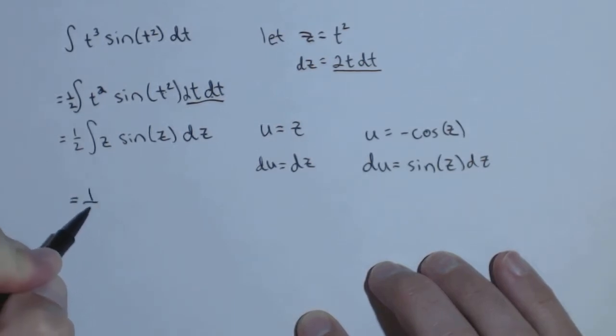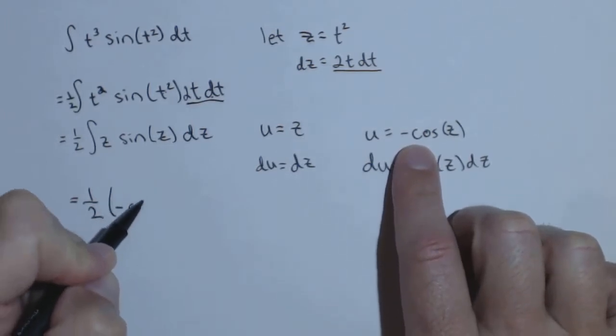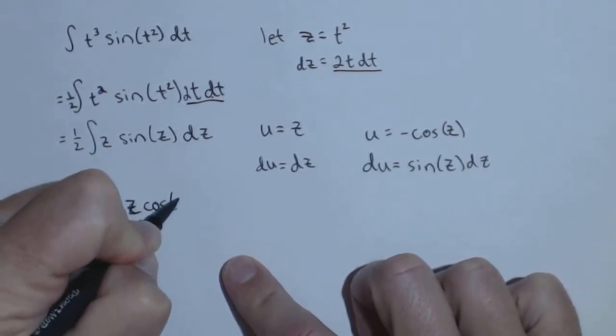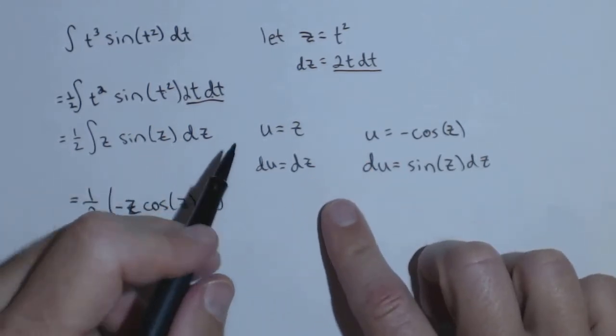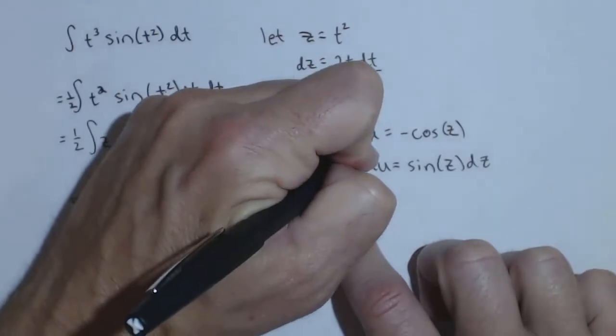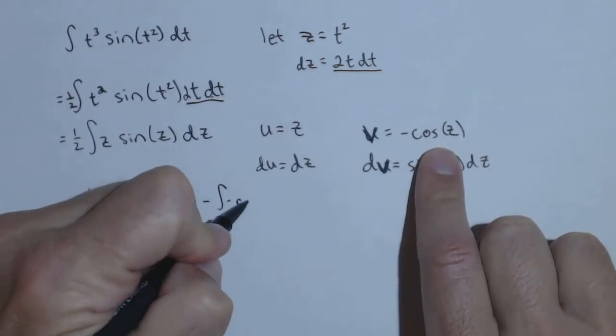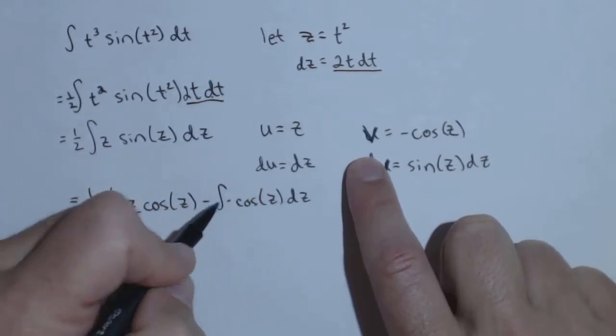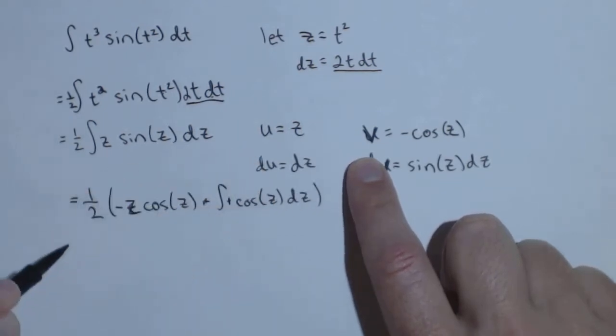So putting this into our integration by parts, we have uv, so the product of those two, is negative, let's write the z first just to make it a little less confusing, negative z cosine of z minus the integral of v du. Excuse me, these should be v's. Now I like to just take care of these constants right away, so that just makes both those positive, and I'll multiply the one half through at the end.